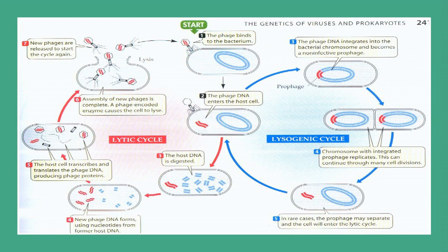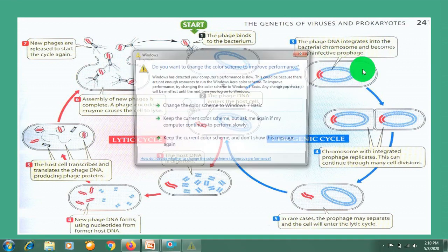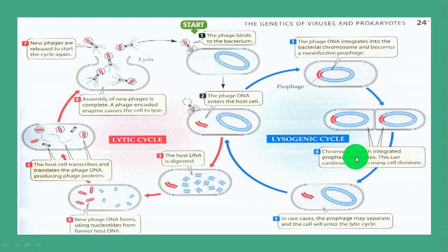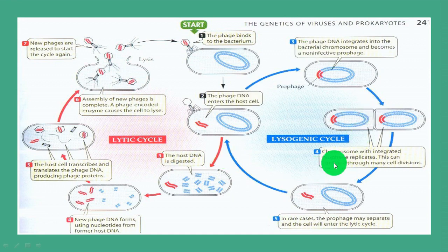The second type of cycle is the lysogenic cycle. In this cycle, when phage DNA enters the bacterial cell, it integrates into the host DNA or bacterial chromosome and becomes a non-infective prophage. These chromosomes with the integrated prophage replicate, increasing chromosome number through many cell divisions. In rare cases, the prophage gets separated from the host DNA and then enters the lytic cycle. This is how the lysogenic cycle takes place — these are the two cycles of bacterial phages.